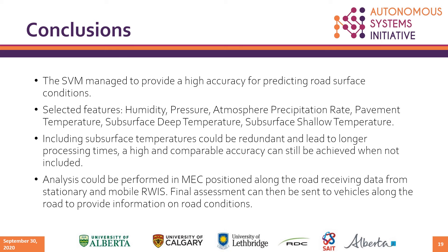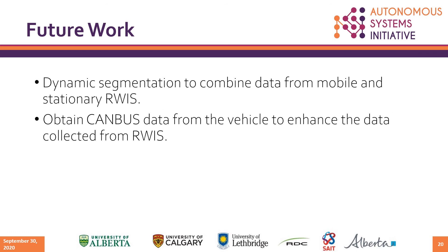In conclusion, the support vector machine managed to provide high accuracy for predicting road surface conditions. The selected features from the railway stations were humidity, pressure, atmospheric precipitation rate, pavement temperature, subsurface deep temperature, and subsurface shallow temperature — however, those last two could be redundant, so we could do without them. The analysis could be performed at a mobile edge computing position along the road, receiving data from stationary and mobile RWIS. The final assessment can then be sent to vehicles along the road. In the future, we plan to do dynamic segmentation to combine data from mobile and stationary stations, and also obtain CAN-bus data from vehicles to enhance data collected from RWIS.